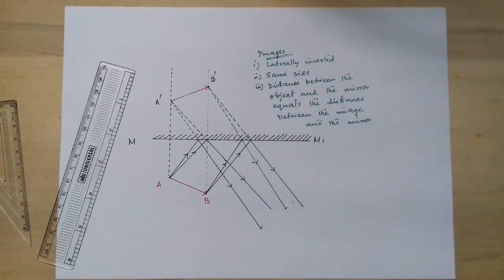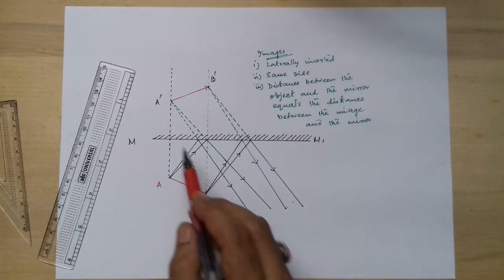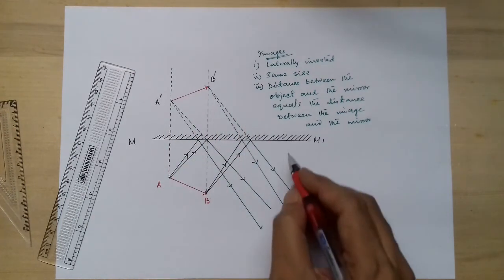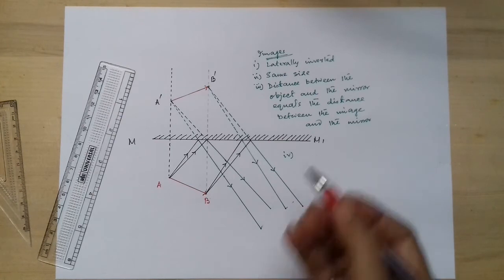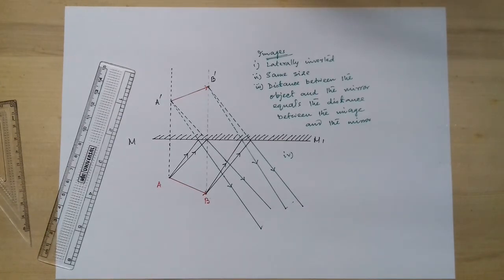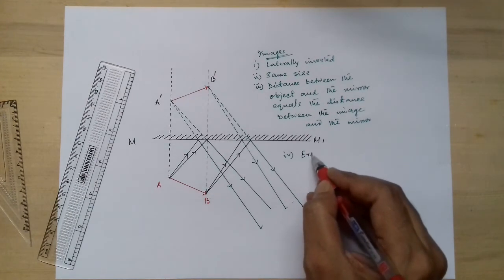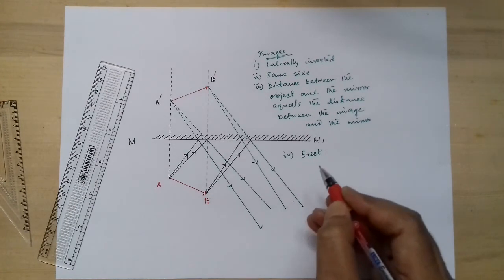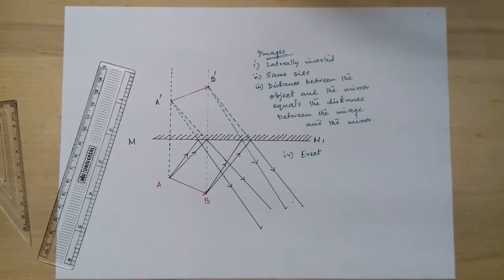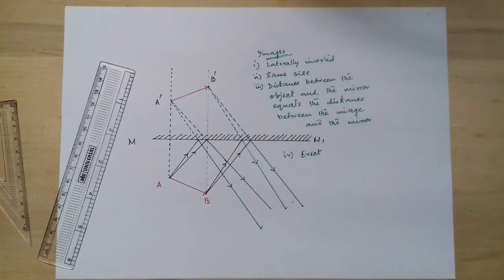Three characteristics we can observe from the drawing. One more thing is if you stand in front of the mirror, then you will see the image is erect, straight, upright. So these are the four characteristics of an image formed by a plane mirror.